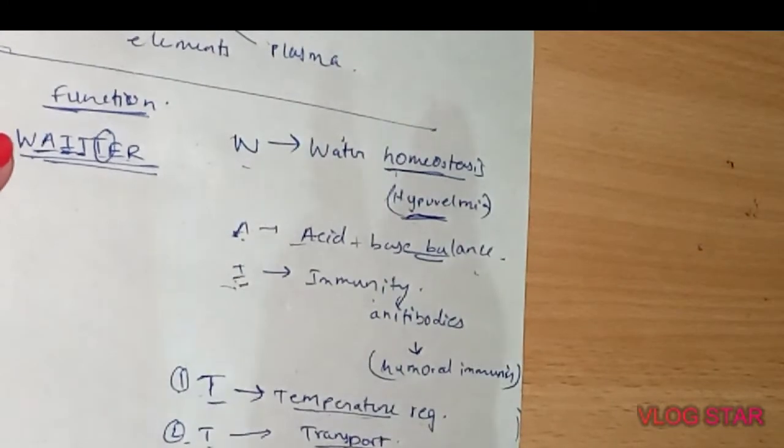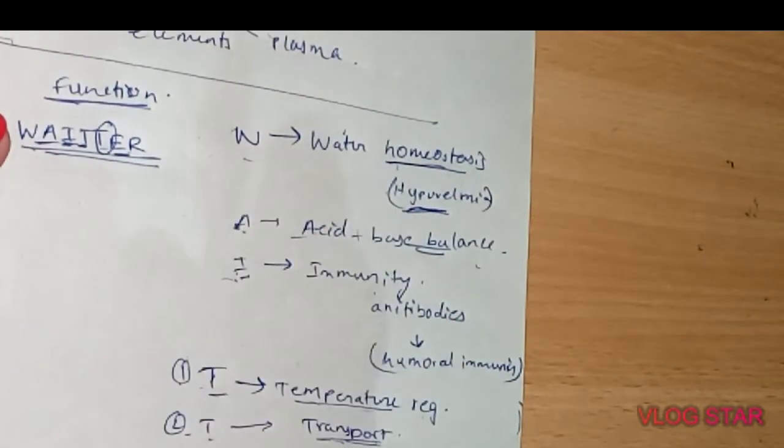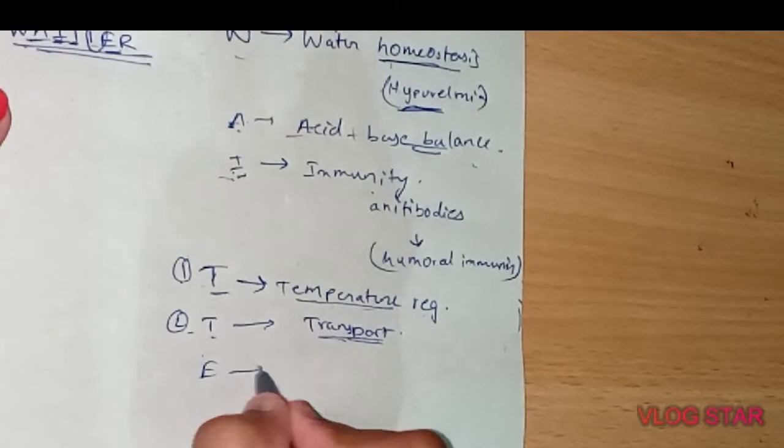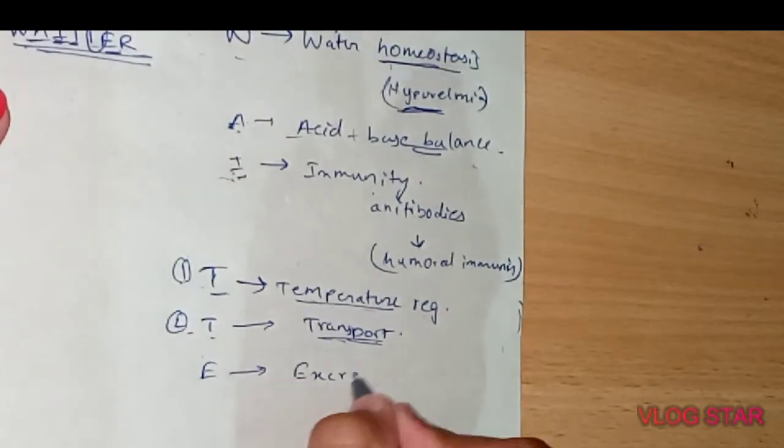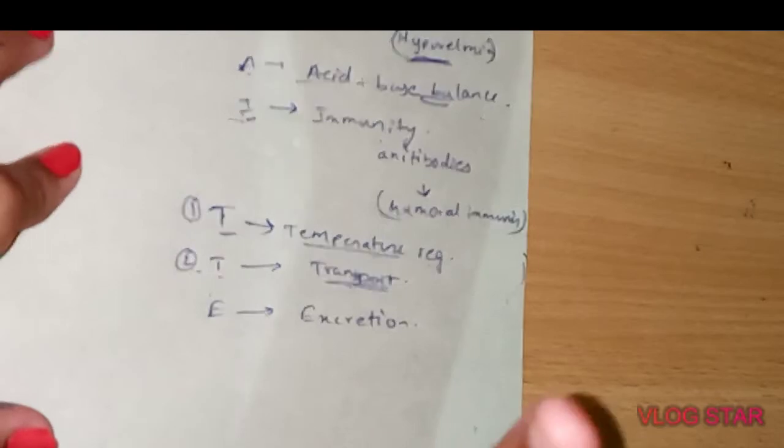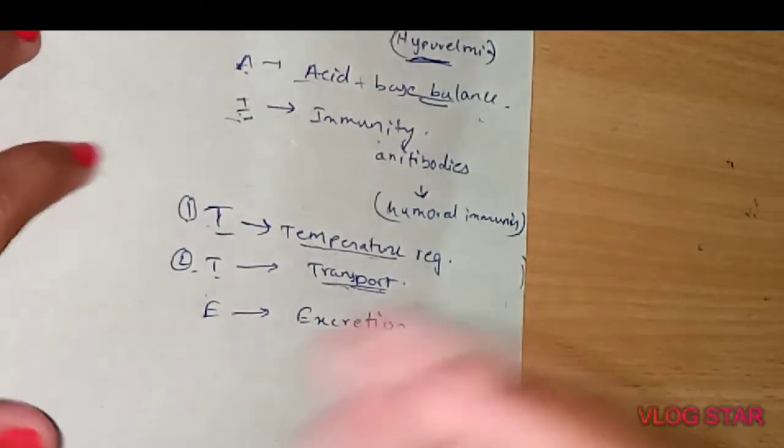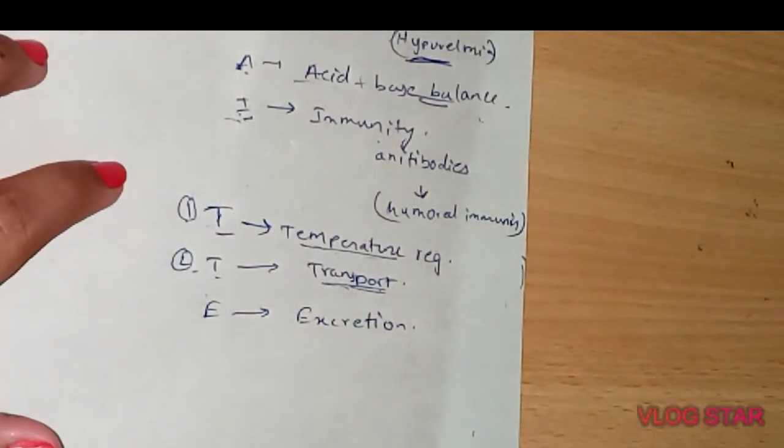E is excretion. Blood helps in excretion of waste materials by transporting from different parts of the body to kidney.